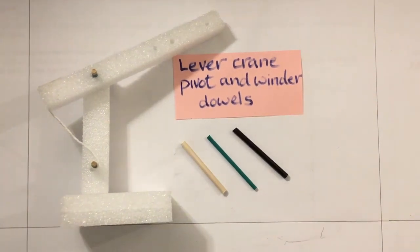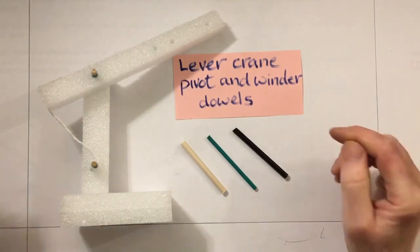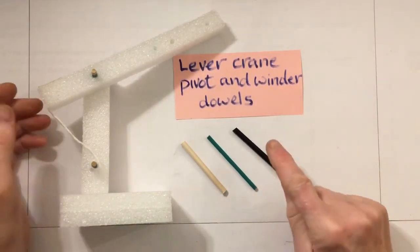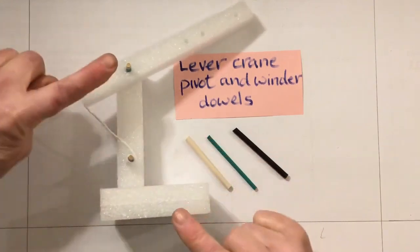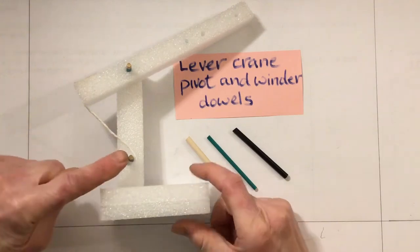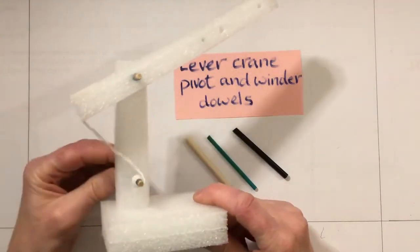There are lots of different materials we can use in making the lever crane, but a very important part is where the parts move. This part here with a string attached is the winder.